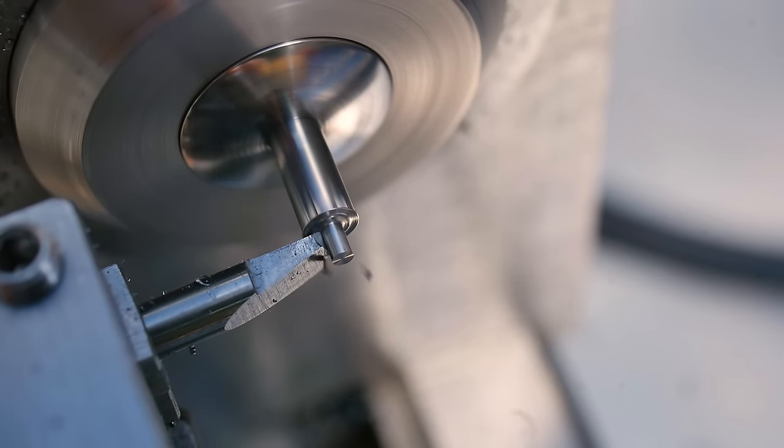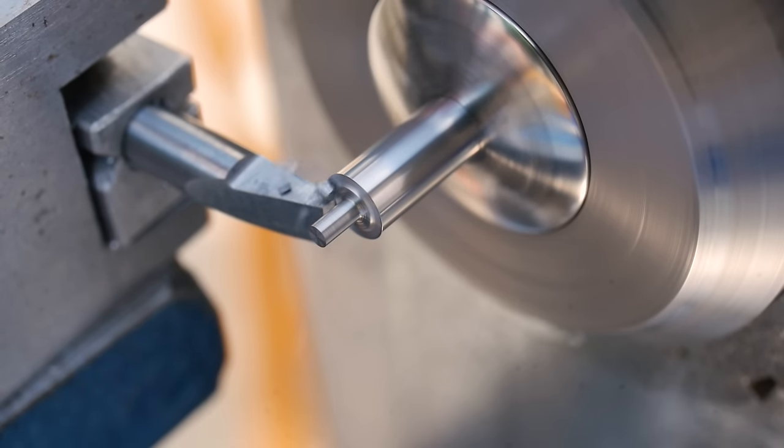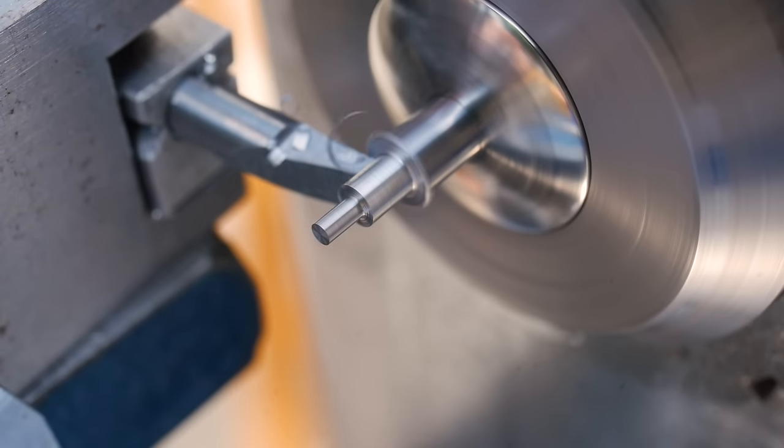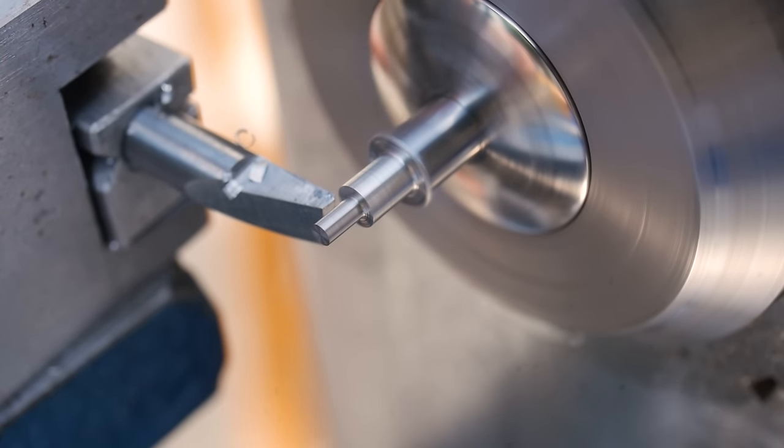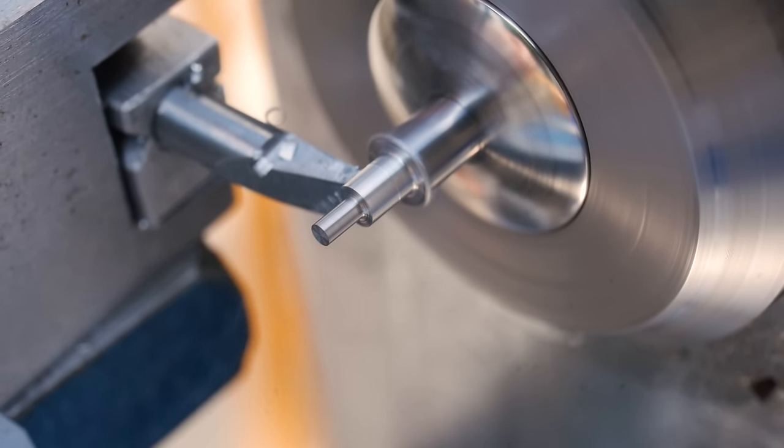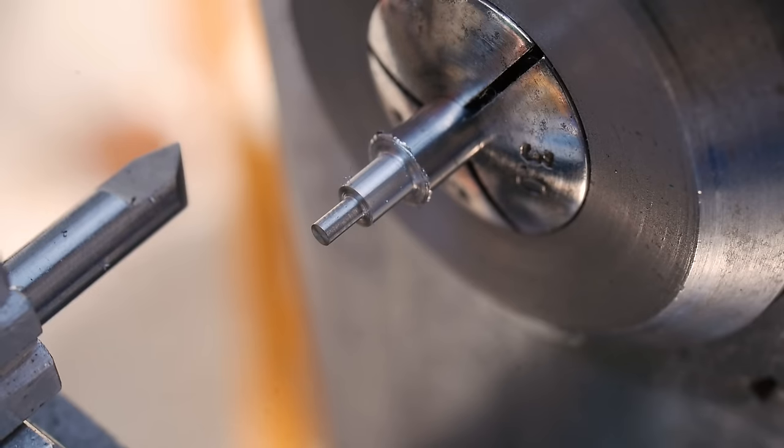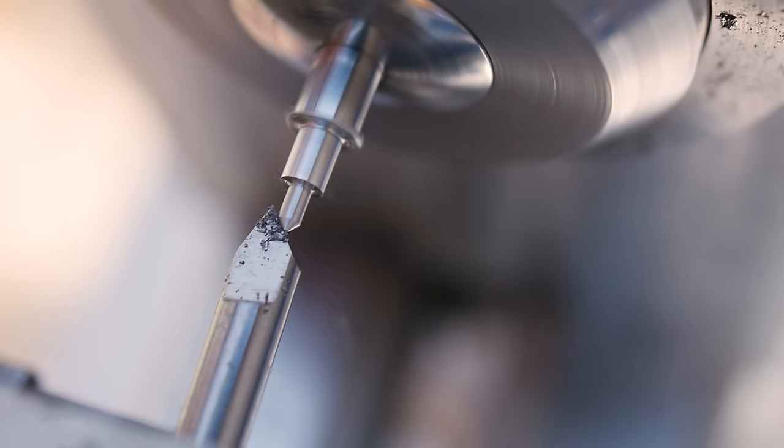I begin by turning the diameters that make up each part of the screw, starting with the threaded portion, followed by the head. On this particular screw, I machine a point on the end.